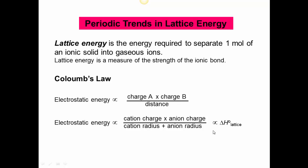Lattice energy is directly proportional to the electrostatic energy. So it's the charge of the cation times the charge of the anion divided by the radius of the cation plus the radius of the anion. If we have a higher charge for our cation and anion, that will increase the lattice energy. And the smaller the radius for our cation and anion, that will increase the lattice energy.